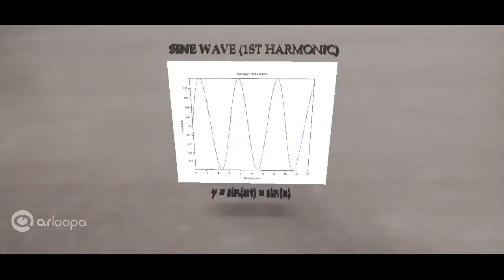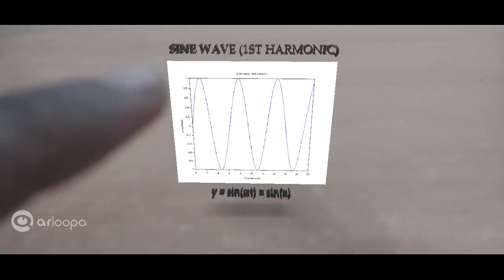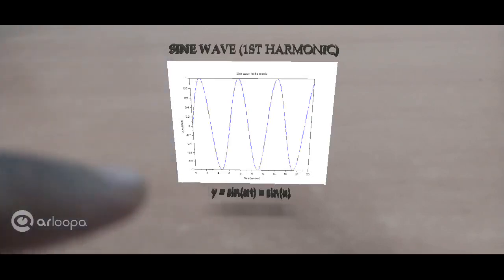Alright, here's the first harmonic or a pure tone sine wave. The equation is sin(ωt). I'm calling ωt as x. It's a pure sine wave. You can observe the sinusoidal function. Now we're going to keep adding odd harmonics so as to convert this into a triangle wave.